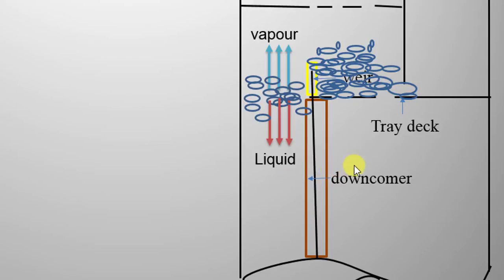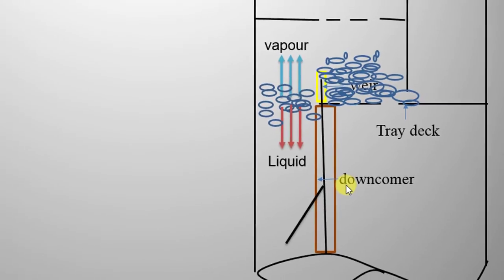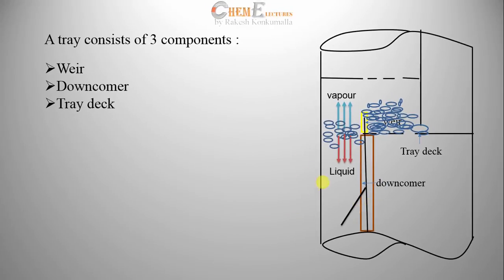The downcomer in this figure is vertical, but generally downcomers are in inclined shape like this so that they give enough residence time. The residence time is usually 3 to 5 seconds.